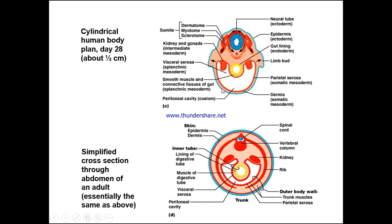The smooth and connective muscle of the gut comes from the splanchnic mesoderm. Looking at a simplified cross-section through the abdomen of an adult — essentially the same arrangement as above — even at this very early stage at day 28, you can imagine how all of this eventually leads to the neural tube forming here, and the other areas pushing in to the midline anteriorly. So we can see the future site of the spinal cord, vertebral column, kidneys, inner tube lining of the digestive tube, and muscles of the digestive tube.